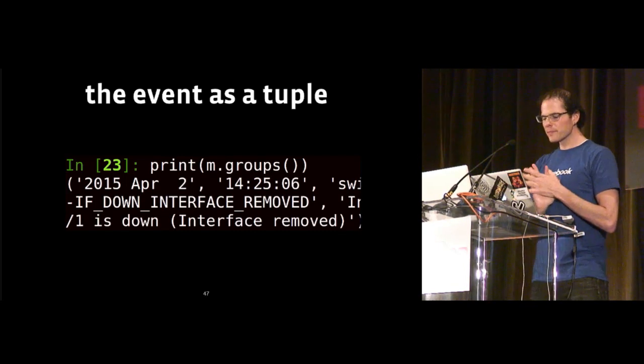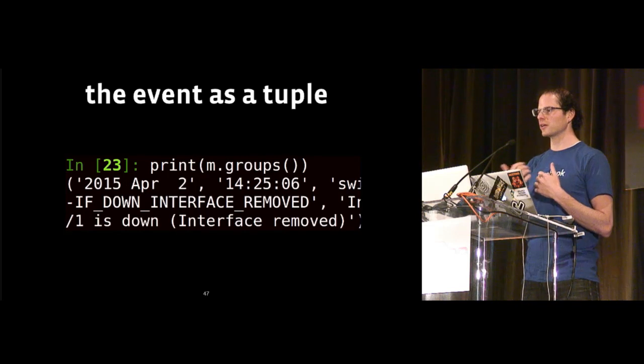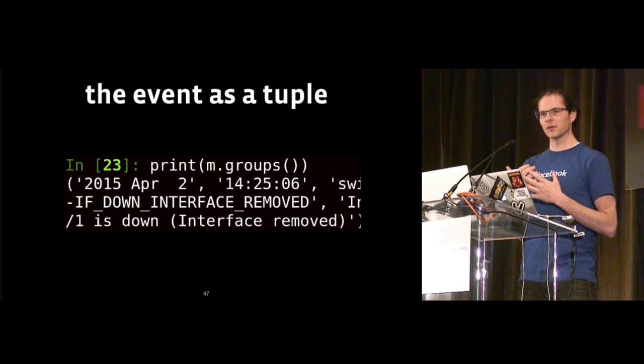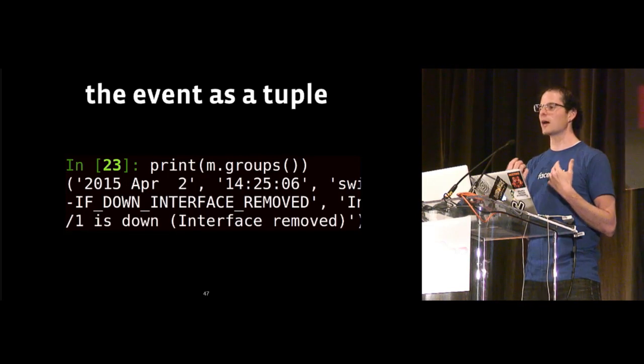We have this system at Facebook called FBAR that is doing a lot of work for us. It reacts to a lot of faults and handles a lot of background noise. But it's been an organic system grown over many years — as a result, it's a little messy. We have a lot of remediations stuffed in single files, with several files that are several thousand lines long. To a new person, that is very scary to look at, even though you're only changing a small section.